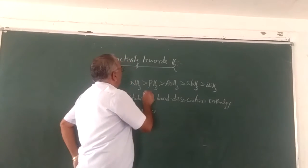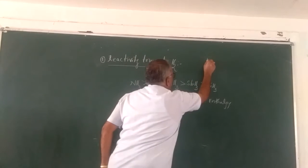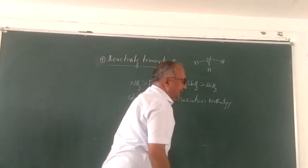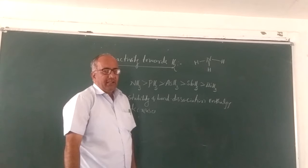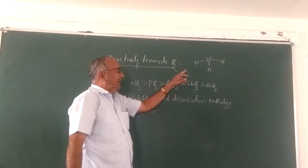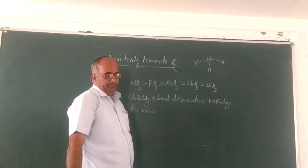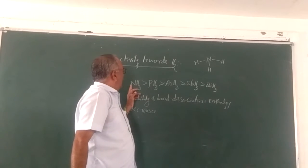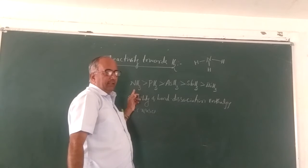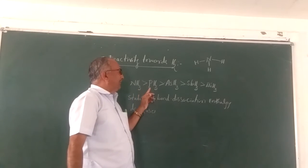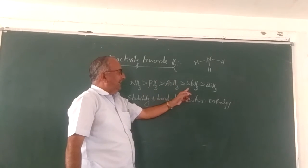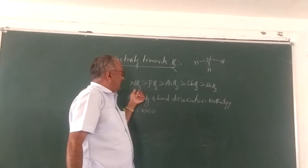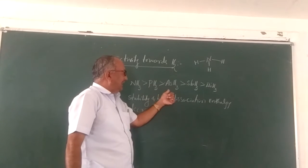Bond dissociation enthalpy is the amount of energy required to break the bond between nitrogen and hydrogen — that is called bond dissociation enthalpy. So ammonia has more bond dissociation enthalpy than phosphine, than arsenic hydride, than antimony hydride, than bismuth hydride. Thus ammonia is more stable than phosphine, than arsenic hydride, etc.